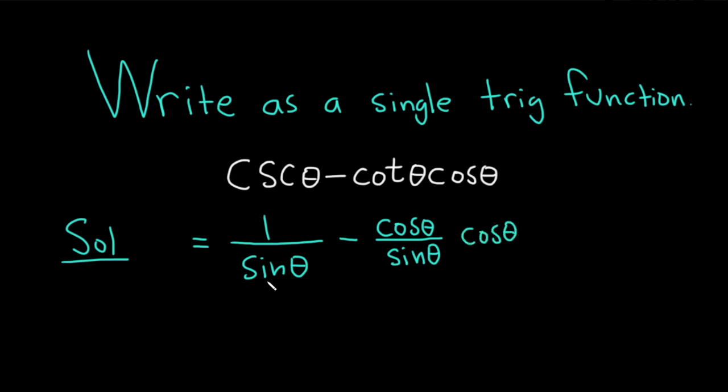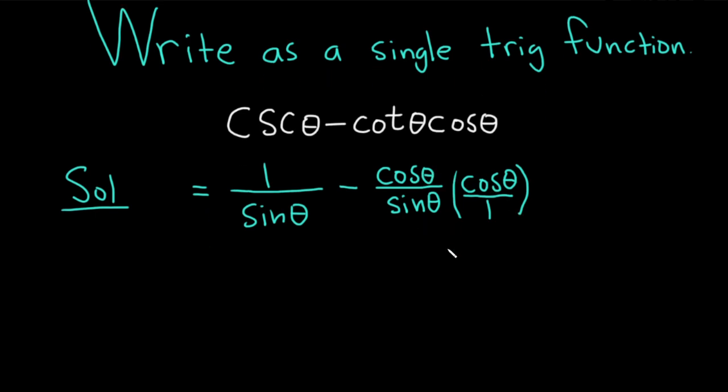This is cool because we have a common denominator here. However, in the next step, before we do any subtraction, let's first multiply these cosines. You can think of this as cosine theta over 1, so you can just multiply here. Cosine times cosine will give you cosine squared.